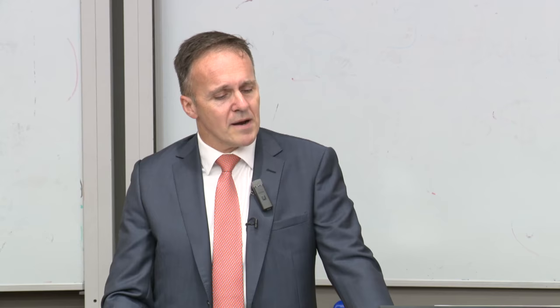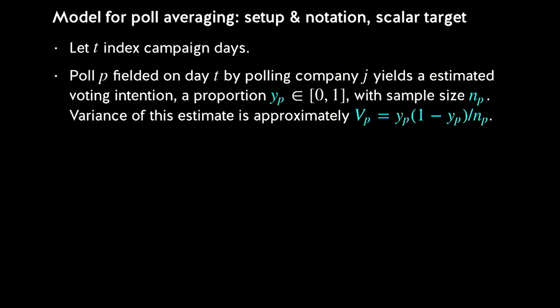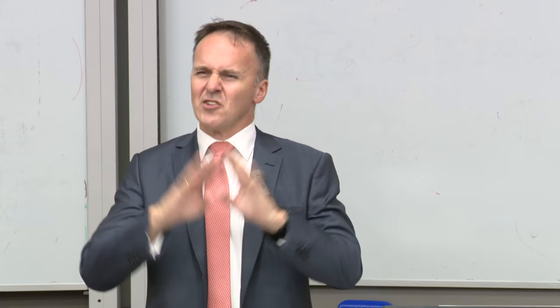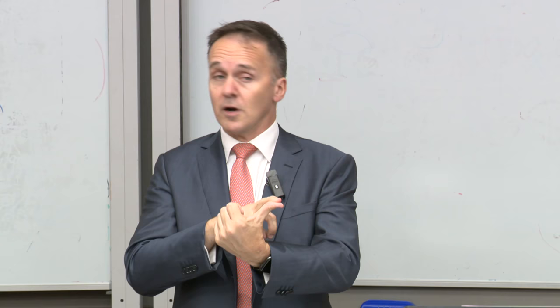But we're interested in the true latent voting intentions, ξ (Xi), which also live on the unit interval. Occasionally we get to observe them without error on election day — assuming no voter fraud. When the electoral commission announces the result, that's the truth; if you were surveying perfectly on that day, you should have hit that number. It's like a signal-processing problem: we know the launch site and the impact site — now can we reconstruct the trajectory?